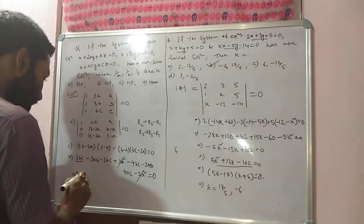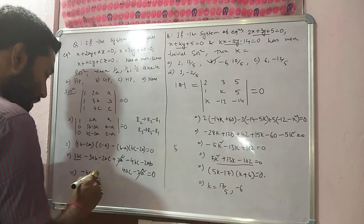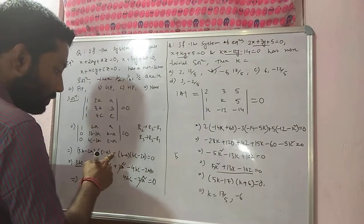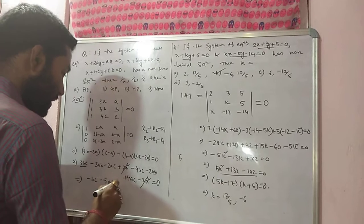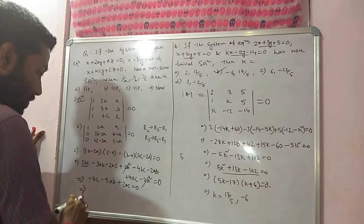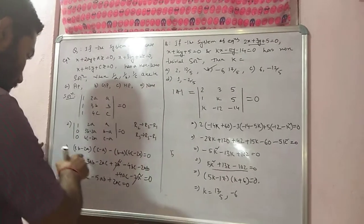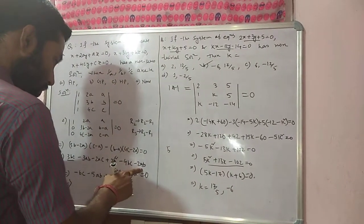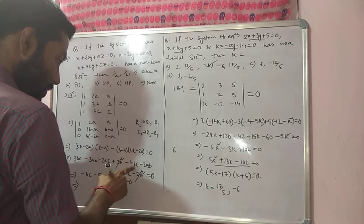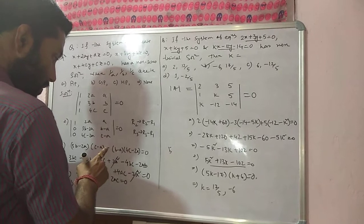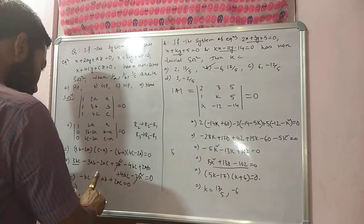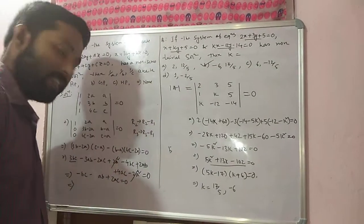This is equal to zero. Minus 2A square plus 2A square cancel. 3BC minus 4BC minus 3AB minus 3AB, this will be minus 5AB, and here 4AC minus 4AC plus 2AC, which is equal to zero.